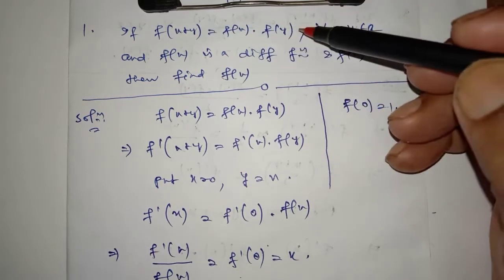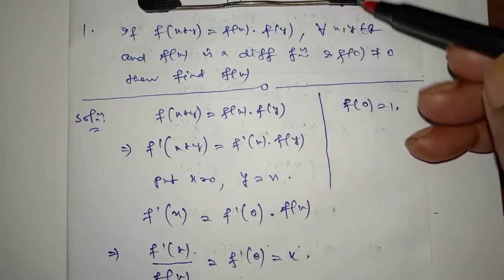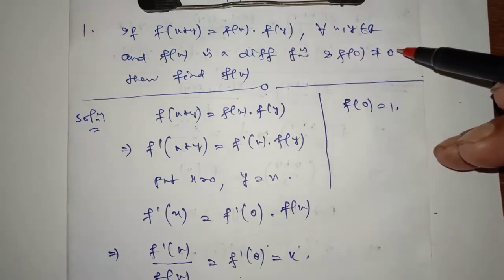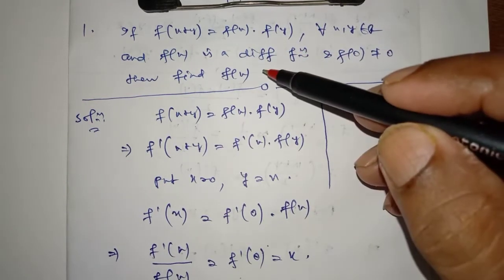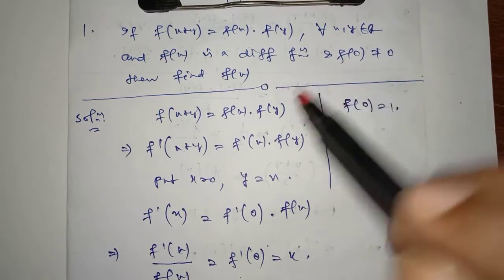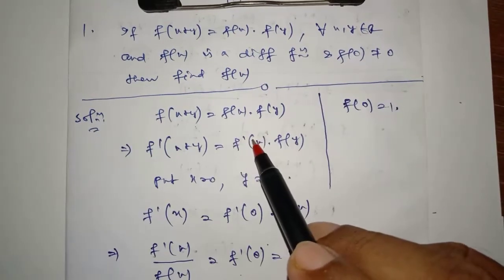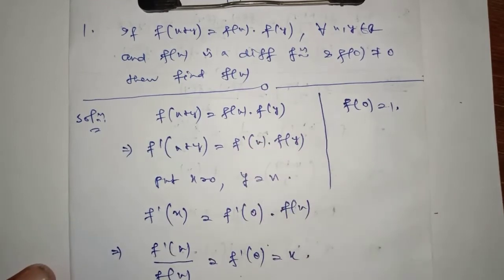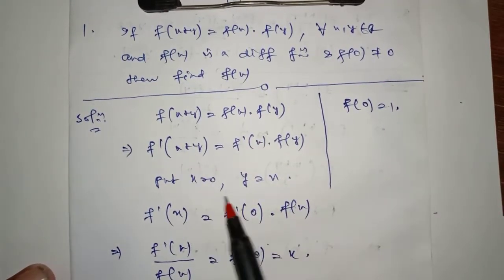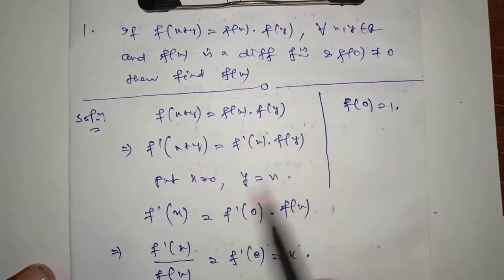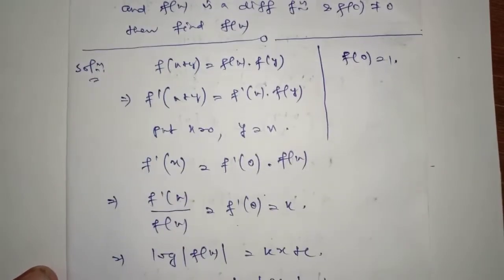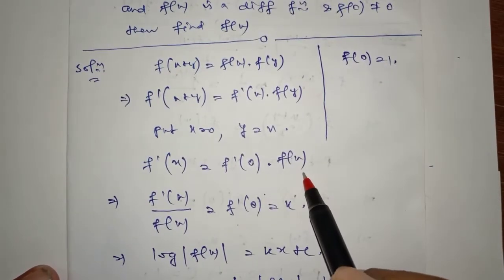Question 1: If f(x+y) = f(x)·f(y) for every x, y belongs to R, f(x) is a differentiable function, and f(0) is non-zero, find f(x). Jab bhi is type ka question ho, aap kya karo ge? Isko differentiate karo with respect to x where y is a constant. Uske baad x ki jagah pe 0, y ki jagah pe x likh do. So f'(x) = f'(0)·f(x).